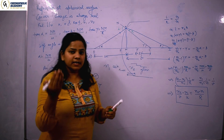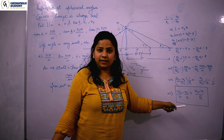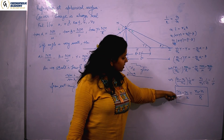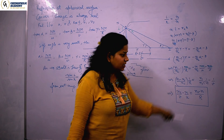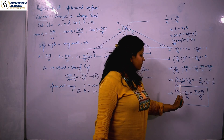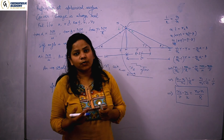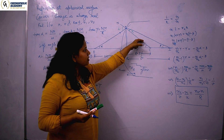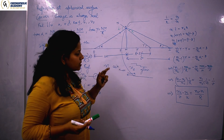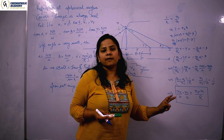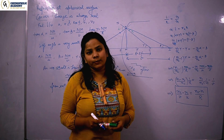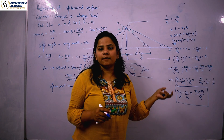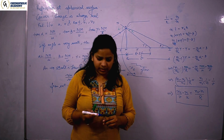Keep in mind: when light is going from medium 1 to medium 2, the image forms in medium 2 and the object is in medium 1, giving n2/v - n1/u = (n2 - n1)/r. If light enters from the other side, you adjust accordingly by swapping n1 and n2. We will now focus on how to solve numerical questions using this formula.